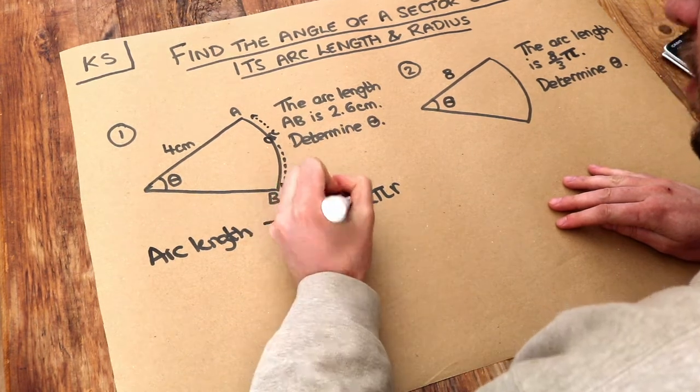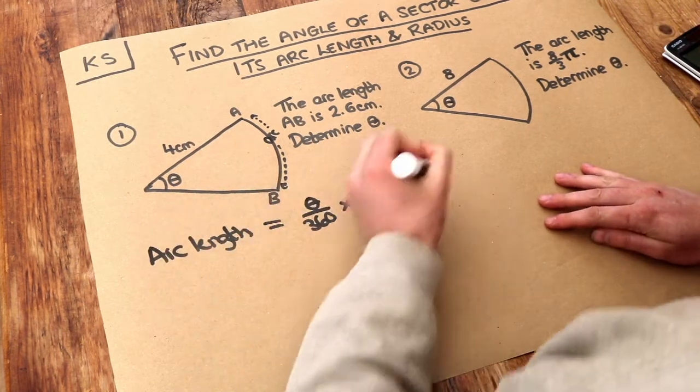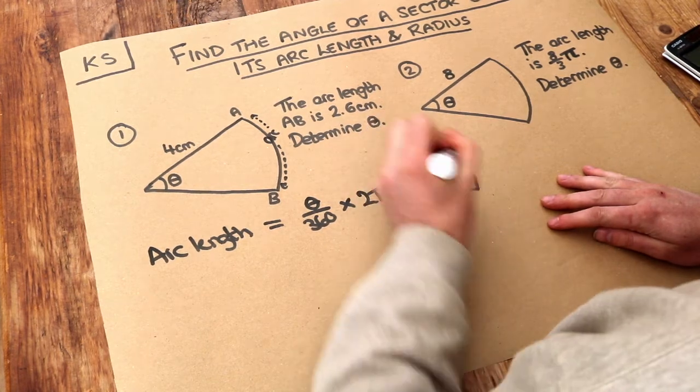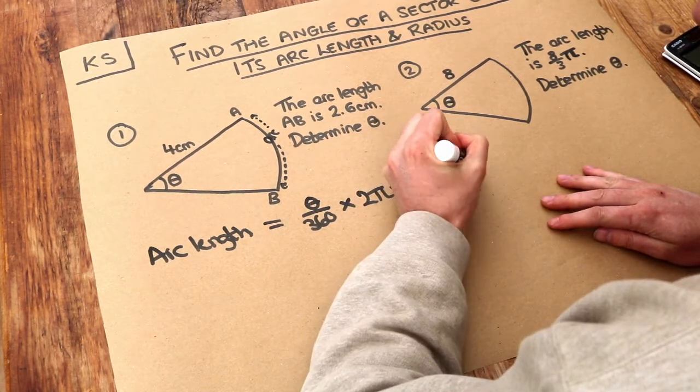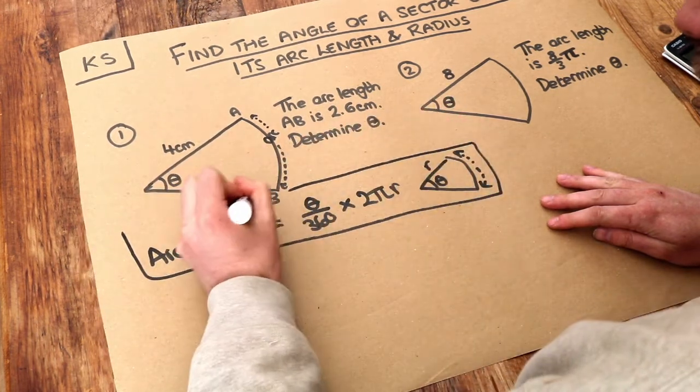So we times this together so we find that fraction of this full circumference of a circle. So that was in general where we had an angle θ here, we had a radius r, and it found this arc length here. So let me just put a box around that because that's a key formula.